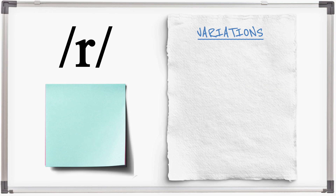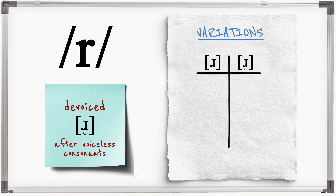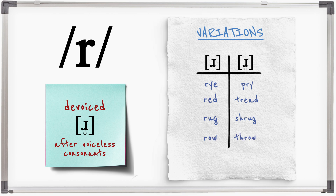R is de-voiced after voiceless consonants. Compare: rye / try, red / tread, rug / shrug, row / throw.